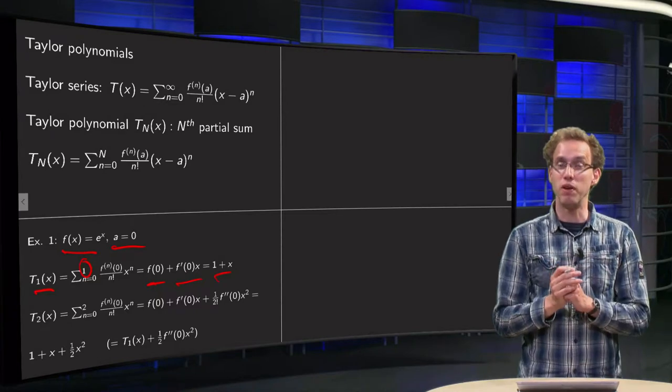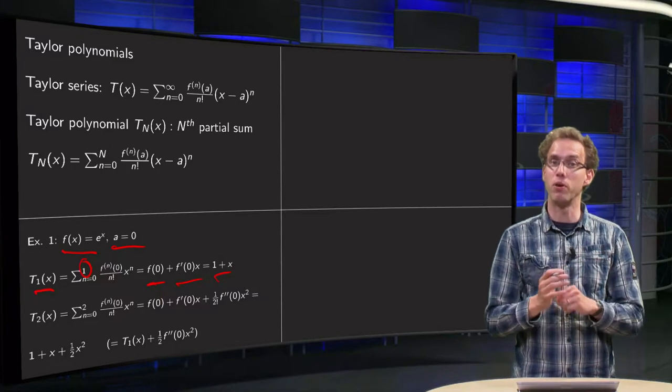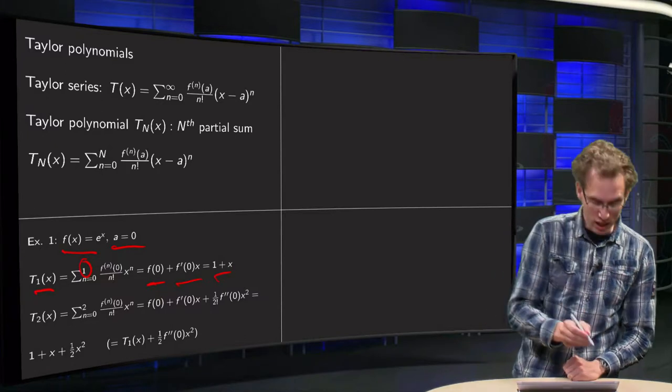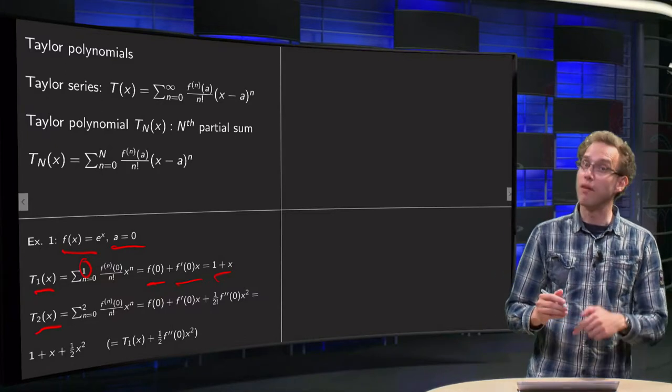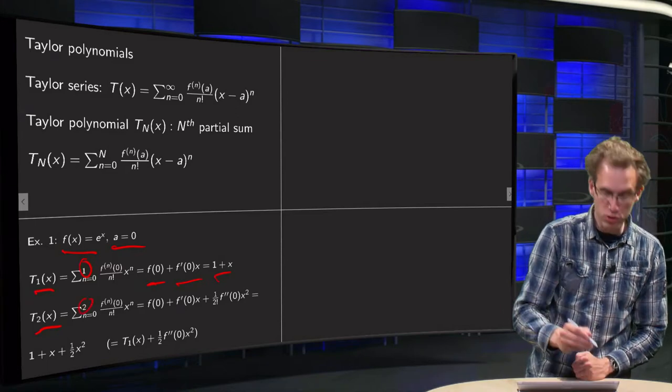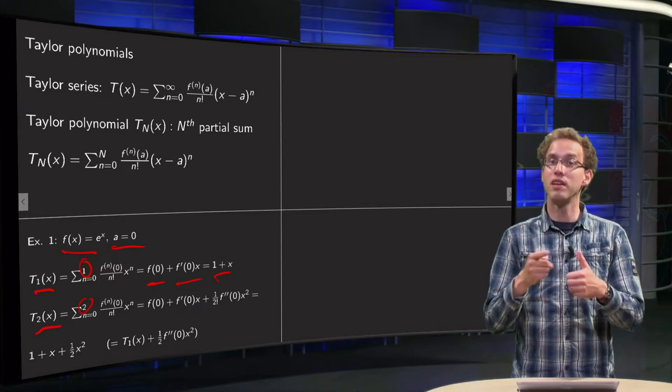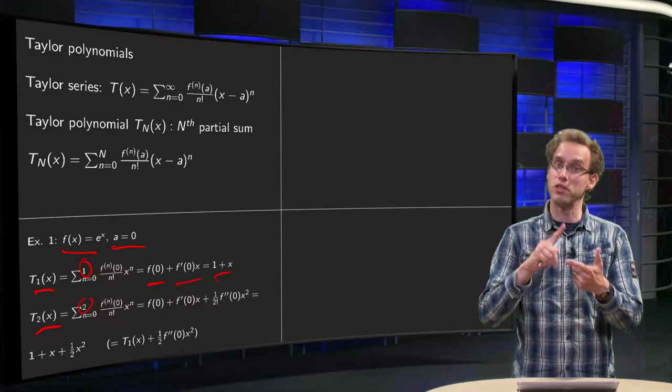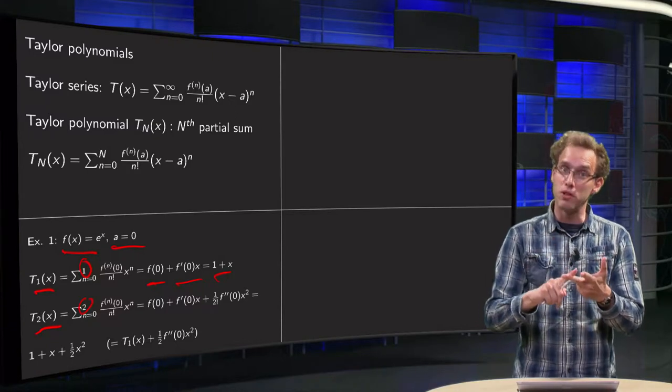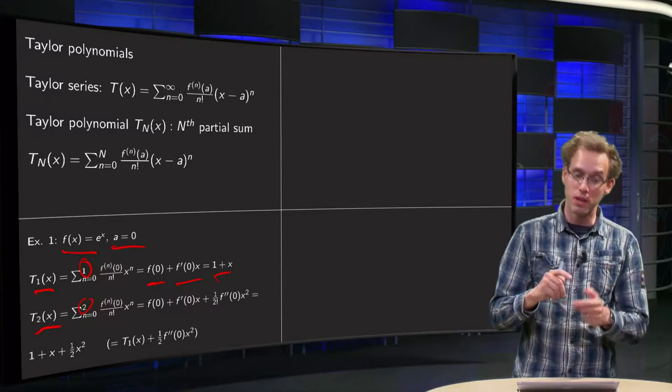So there we have T1, the first Taylor polynomial. And we compute the second one, so T2 of x, and we have to sum up to n equals two. So what do we get: f(0) plus f'(0) times x plus f''(0) divided by two times x squared.